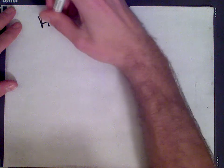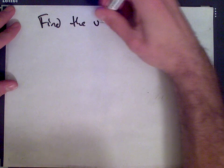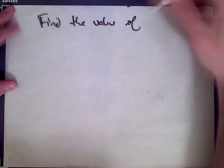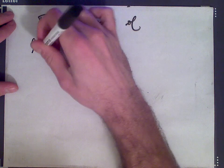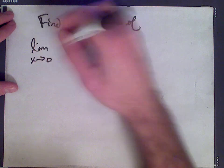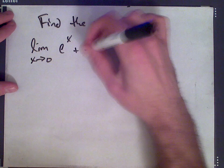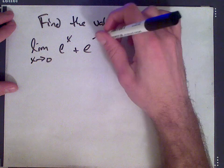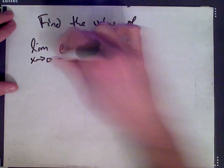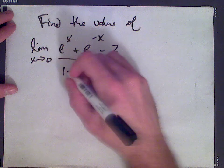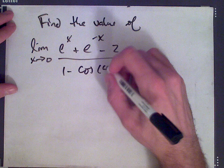Question 1 has to do with L'Hopital's rule and it asks to find the value of the limit as x goes to 0 of e to the power of x plus e to the power of negative x minus 2 divided by 1 minus cos of 4x.